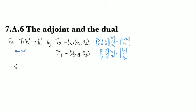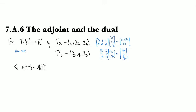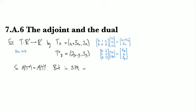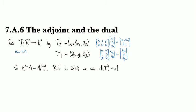So what we see here is that the matrix of t star is the transpose of the matrix of t. So what's going on here?